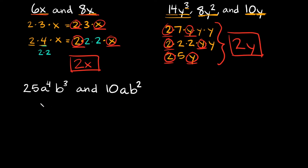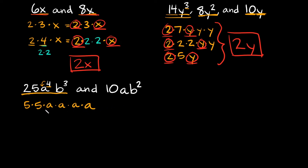Now let's try the last one: find the greatest common factor between 25a⁴b³ and 10ab². Starting with 25a⁴b³ — the number 25 breaks down into 5 times 5, and both are prime. Then a to the 4th means 4 a's: a times a times a times a. And b cubed means 3 b's: b times b times b.